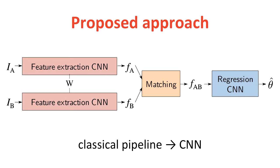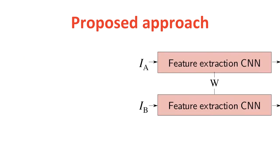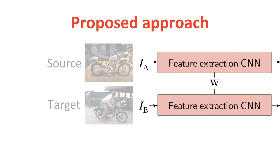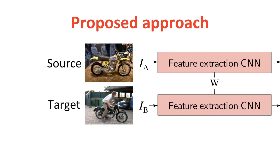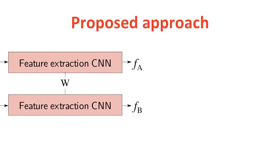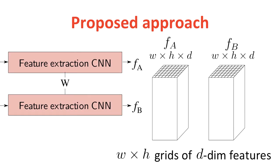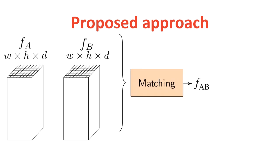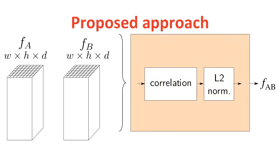Let's look into each of these steps in more detail. We start with the source and target images, which are passed to a Siamese Feature Extraction CNN with shared weights. On the output we obtain two dense feature grids. These dense feature grids are then input into the second stage, the matching layer, which is internally composed of a correlation operation and an L2 normalization.